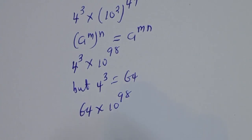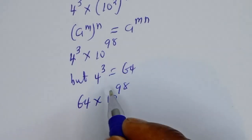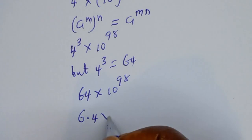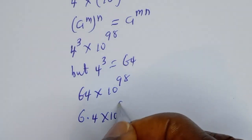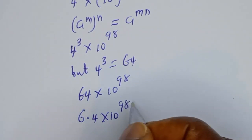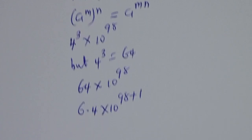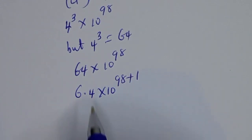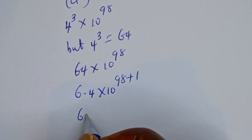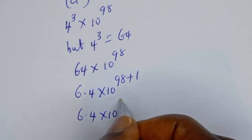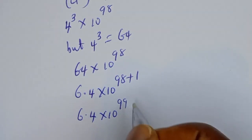So this is 64 multiplied by 10 to the power of 98. Now in order to write this in standard form, this can be written as 6.4 multiplied by 10 to the power of 98 plus 1, because of the decimal point shift. Then this is 6.4 multiplied by 10 to the power of 99.